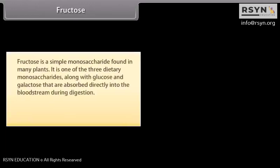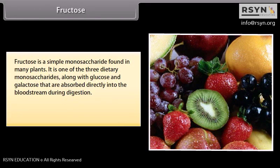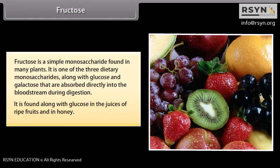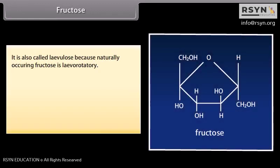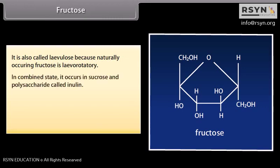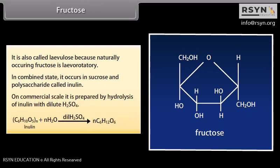Fructose is a simple monosaccharide found in many plants. It is one of the three dietary monosaccharides, along with glucose and galactose, that are absorbed directly into the bloodstream during digestion. It is found in ripe fruits and honey, and is also called levulose because naturally occurring fructose is levorotatory. In combined state, it occurs in sucrose and the polysaccharide inulin. On commercial scale, it is prepared by hydrolysis of inulin with dilute H₂SO₄.